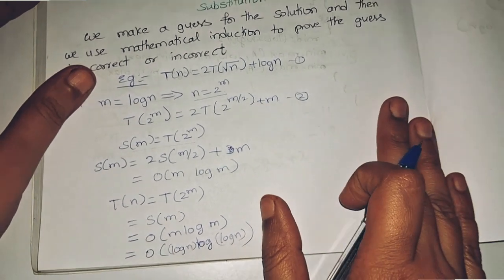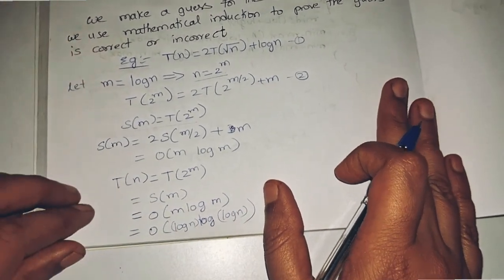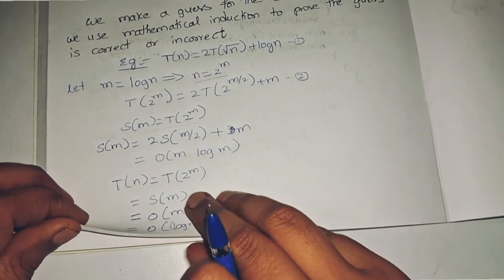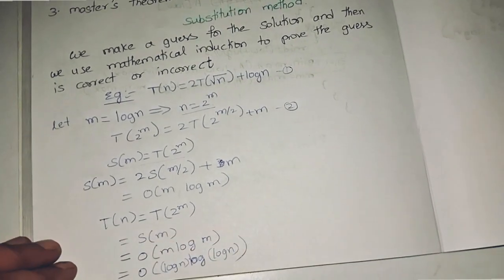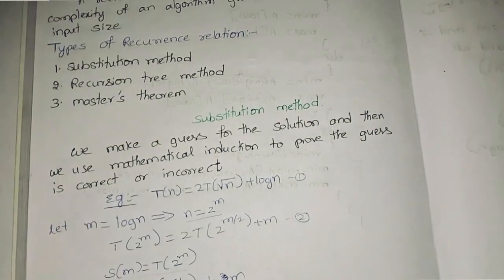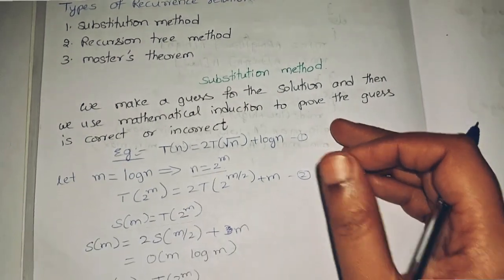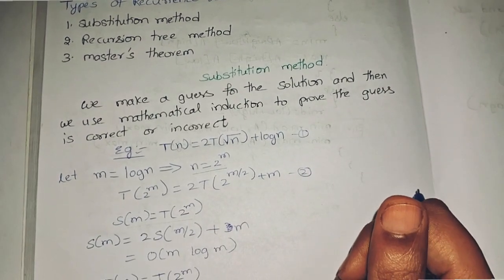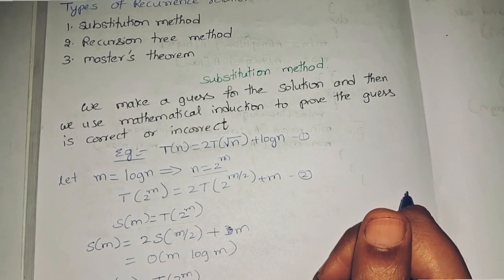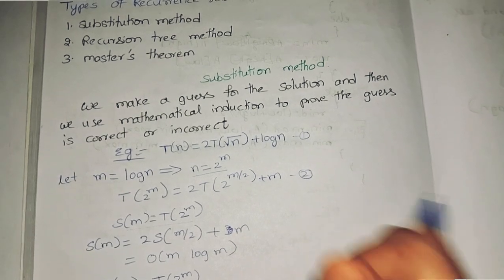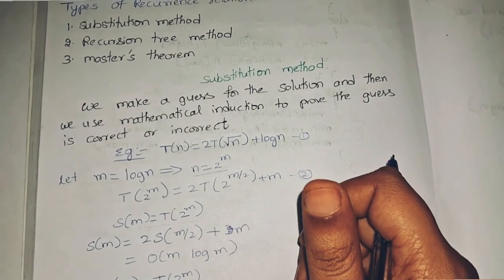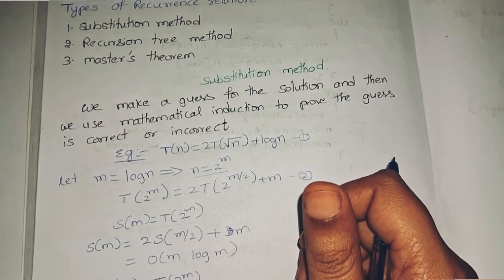You can solve the same recurrence relation using different methods: substitution method, recursion tree method, or master's theorem. This was about the substitution method. In the next video we will learn about the recursion tree method in detail. Thanks for watching the video.